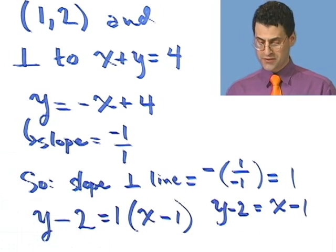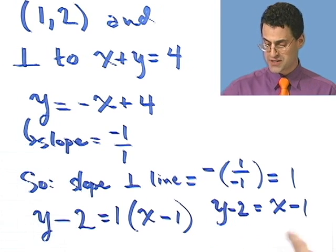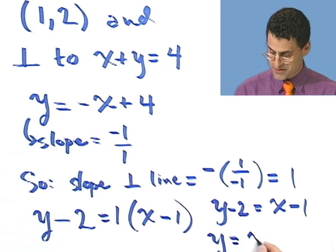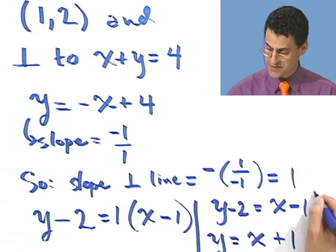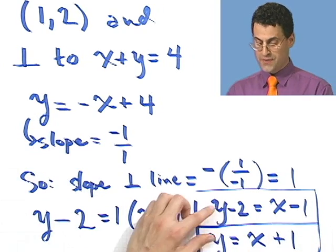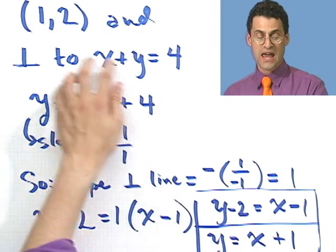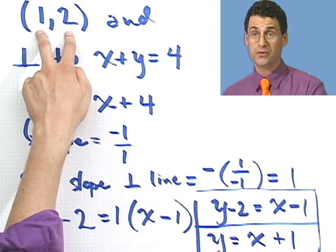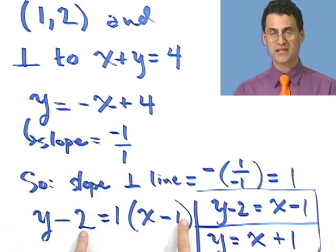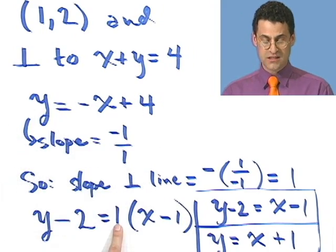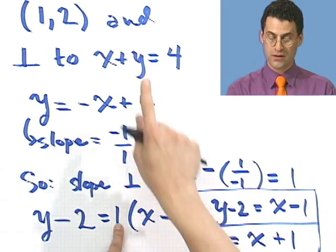Or if you want to write it in slope intercept form, just add 2 to both sides. And I would see y = x + 1. Either one of these answers is correct. This is the line that is perpendicular to this line and passes through the point (1,2). It passes through the point (1,2) because I put that point in. And it's perpendicular to this line because the slope is the negative reciprocal of the slope of this line. Neat!